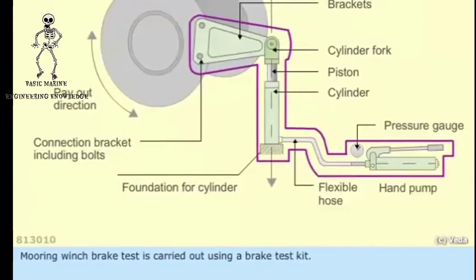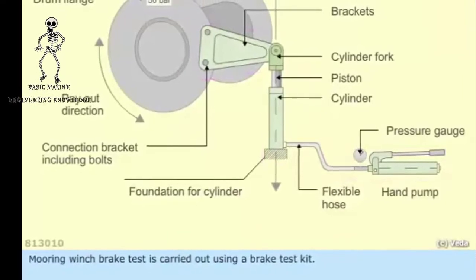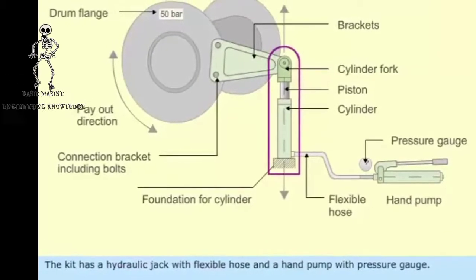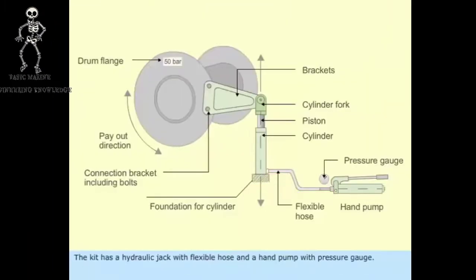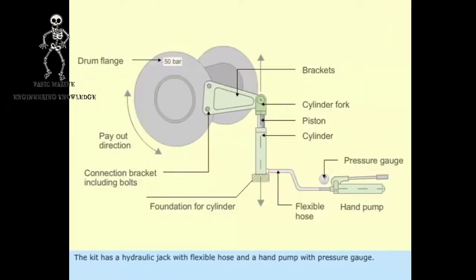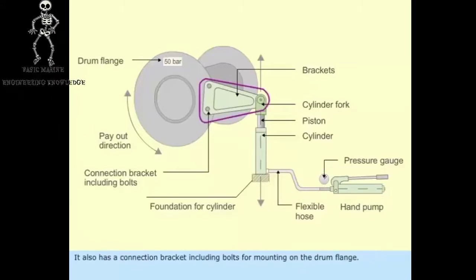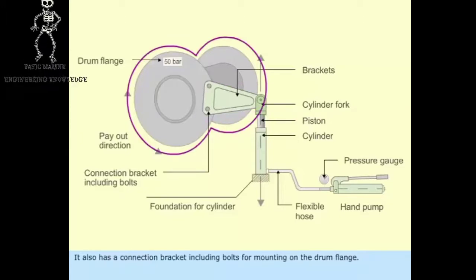Mooring Winch Brake Test is carried out using a brake test kit. The kit has a hydraulic jack with flexible hose and a hand pump with pressure gauge. It also has a connection bracket including bolts for mounting on the drum flange.